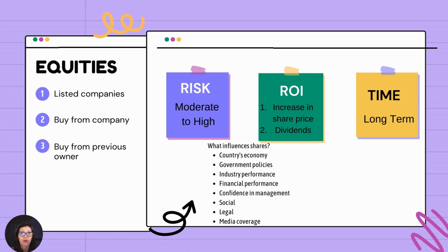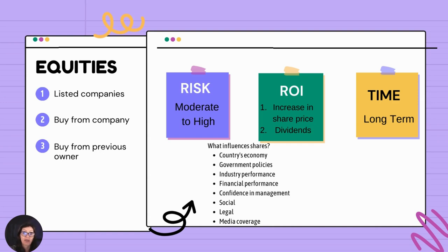The financial performance of the company — what is the return on investment, how is it looking healthy, what are the ratios looking like for that company? Confidence in management: if there is a lack of confidence in the people managing the company, people are not going to invest or buy shares. Any social elements that could affect your company — AIDS, COVID-19, anything like that, it all affected us. Any legal changes and the media coverage of that particular company — if you're getting bad PR, people are generally not going to invest in something receiving a lot of bad PR.